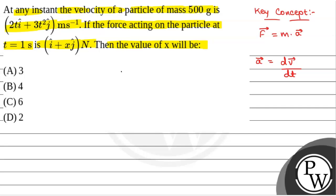We have been given velocity of a particle v is 2t i cap plus 3t square j cap. So, acceleration of the particle that will be equal to dv by dt which is equal to 2 i cap plus 6t j cap.